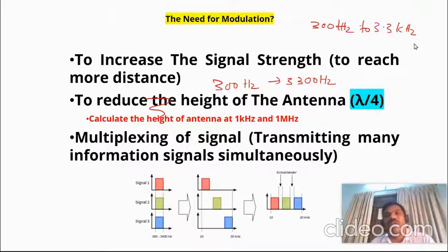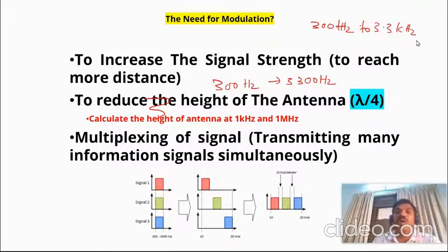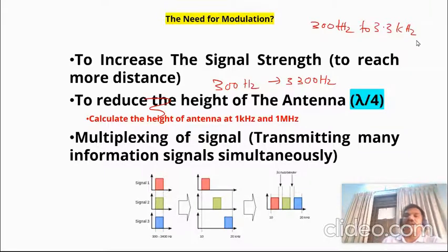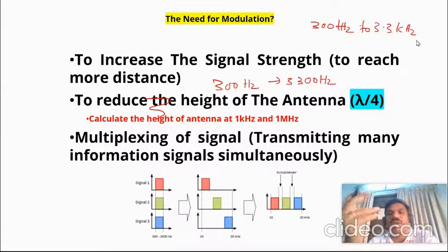The signal cannot reach more distance. For example, FM radio — stations like Radio Mango and others need to reach large distances. In order to do that, we have to modulate the signal. We superimpose the message signal onto a carrier signal and then transmit it. There are two types of modulation: AM (amplitude modulation) and FM (frequency modulation).